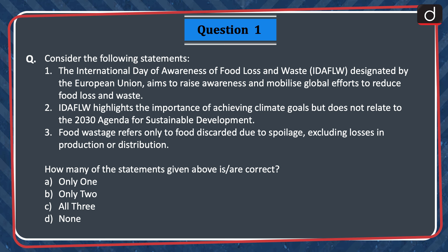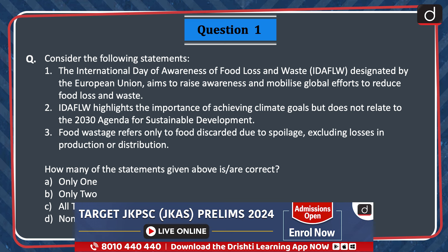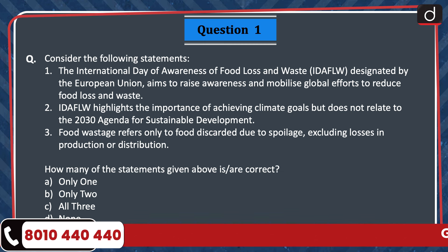Now let's begin today's episode. First question: consider the following statements. 1. The International Day of Awareness of Food Loss and Waste, designated by the European Union, aims to raise awareness and mobilise global efforts to reduce food loss and waste. 2. IDA FLW highlights the importance of achieving climate goals but does not relate to the 2030 Agenda for Sustainable Development. 3. Food wastage refers only to food discarded due to spoilage, excluding losses in production or distribution. How many of the statements are correct? The correct answer is option D, none.